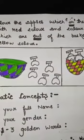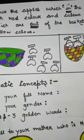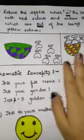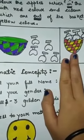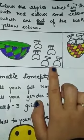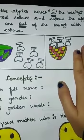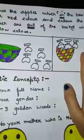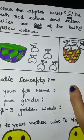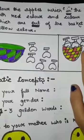Now the third question: colour the apples which are in the basket with red colour and colour the apples which are out of the basket with yellow colour. I have drawn one basket here with apples inside and outside. You have to identify which apples are in the basket and colour them red, and which are out of the basket and colour them yellow.